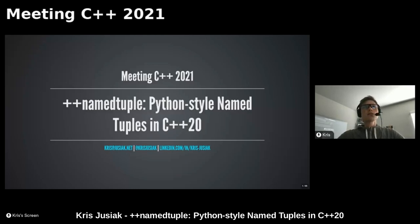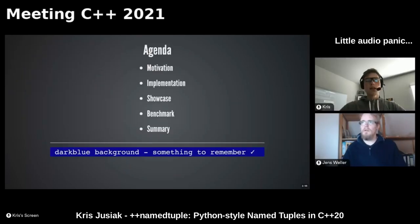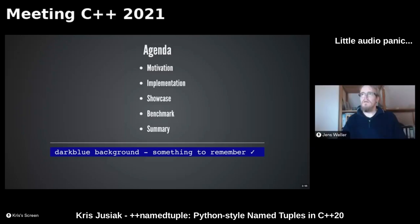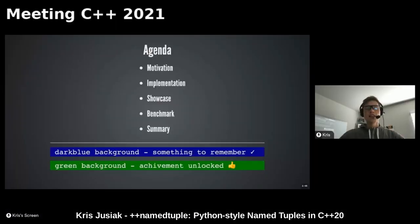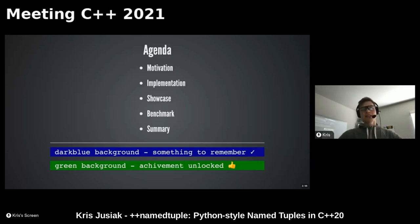This session will also explain why we cannot have awesome things yet in C++20, but it will explain when we unlock an achievement. Hopefully that makes sense, and without further ado, let's begin.